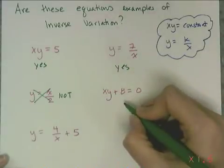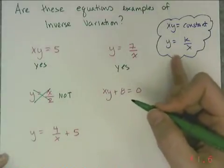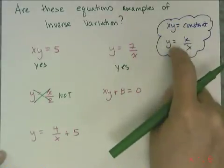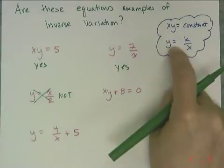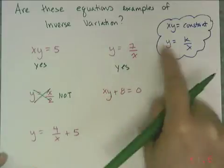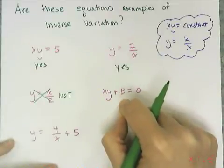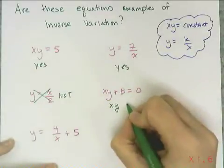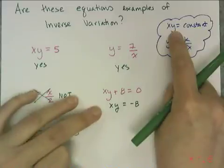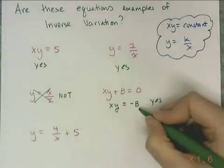The next example looks like it might not be an inverse variation because of the plus 8. But remember, if I can use a property of equality to transform it into one of those forms, then it is indeed an inverse variation. If I subtract 8 from both sides using the subtraction property of equality, I get xy equals negative 8. It is in that form, so yes, this is an inverse variation with a constant of negative 8.